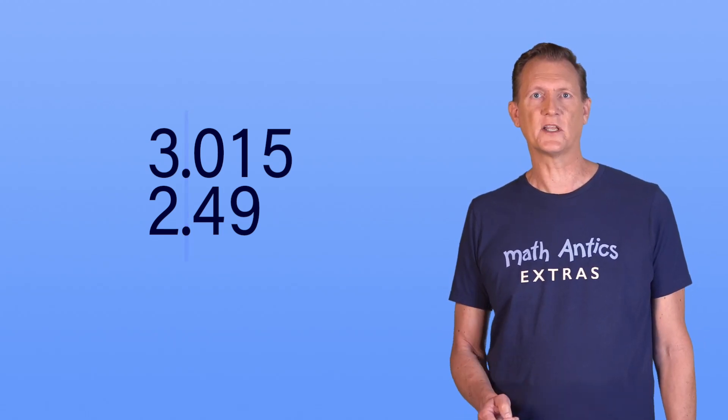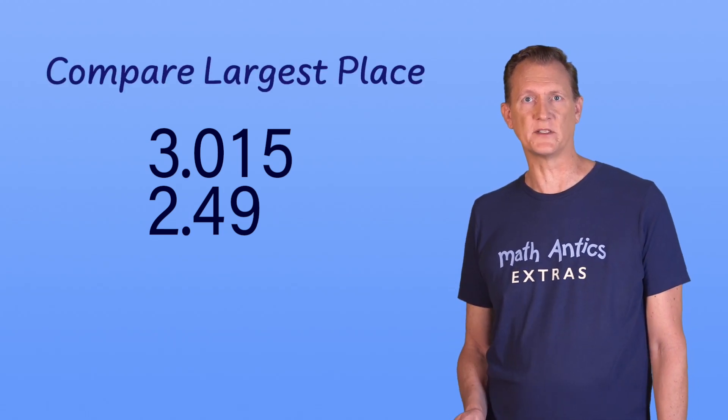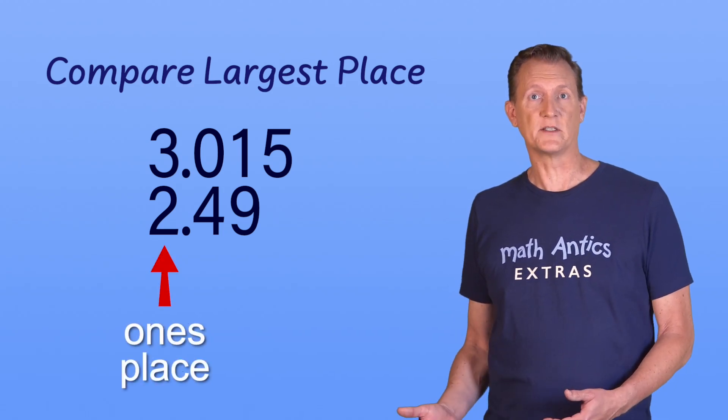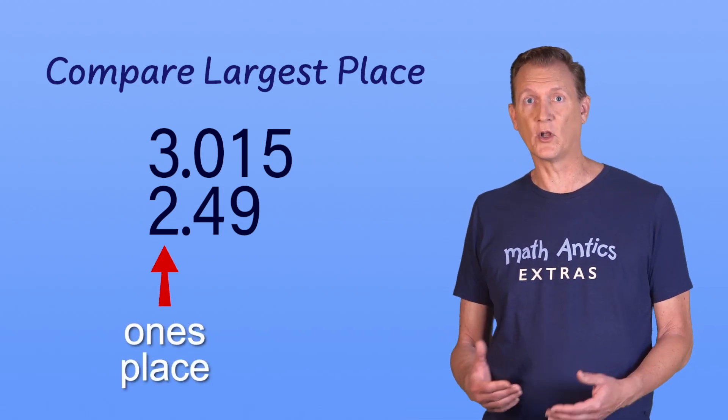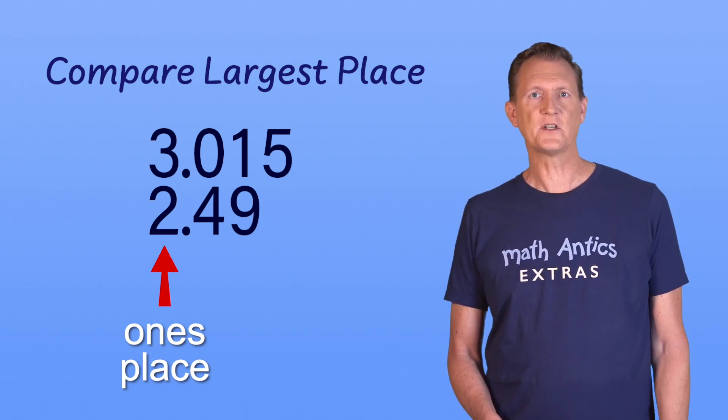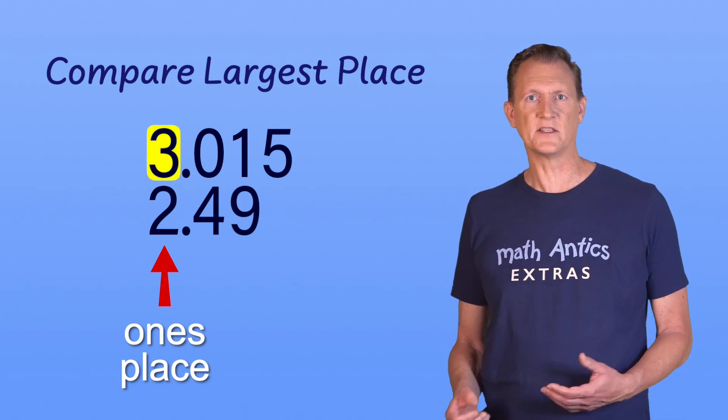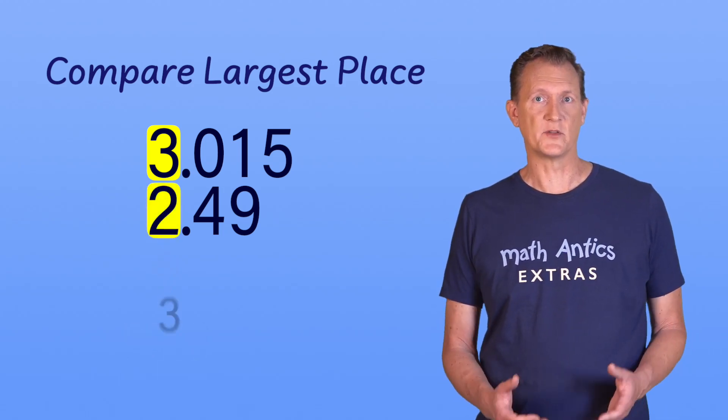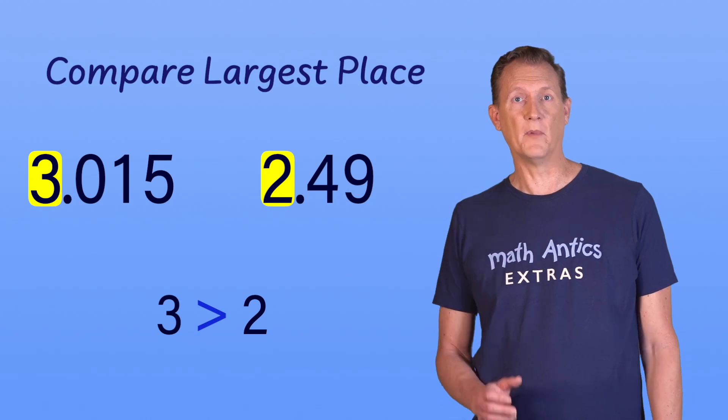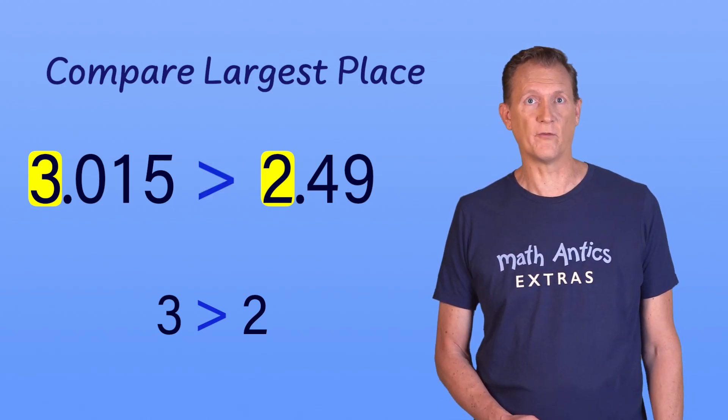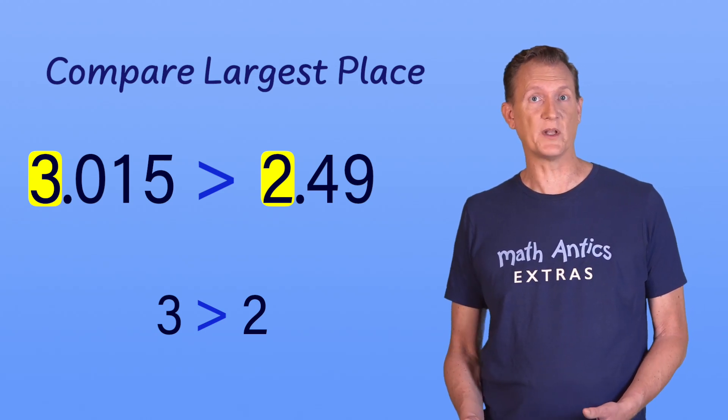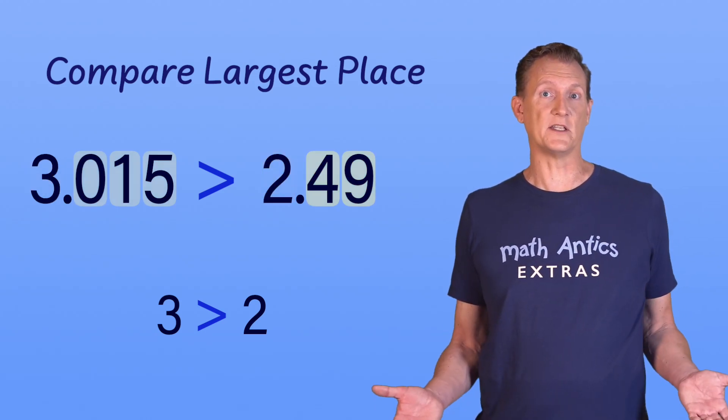Next, just like with whole numbers, we compare the digits in the largest number place, which is always the furthest to the left. In this case, that's the ones place, which doesn't seem very large, but it's larger than either of the other decimal number places to the right. The first number has a 3 in the ones place, and the second number has a 2. Since 3 is greater than 2, the decimal 3.015 must be greater than the decimal 2.49. Because we could tell which number was bigger just from the ones place digits, we didn't even need to look at the decimal digits.